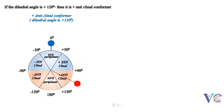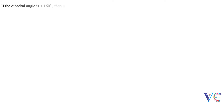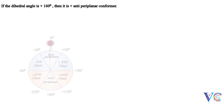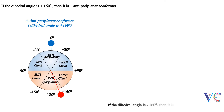If the dihedral angle is plus 160 degrees, then it is plus antiparaplanar conformer. If the dihedral angle is minus 160 degrees, then it is minus antiparaplanar conformer.